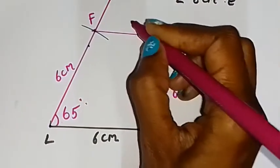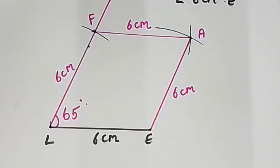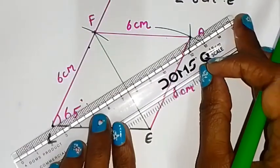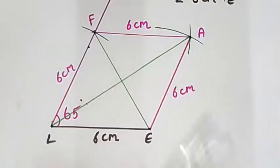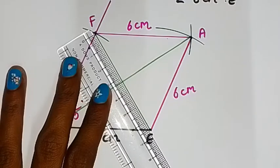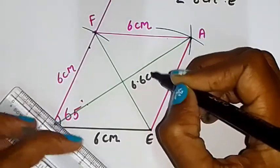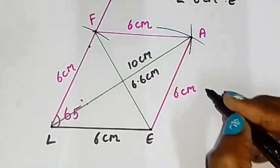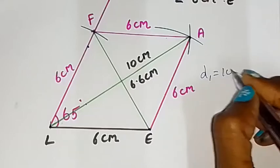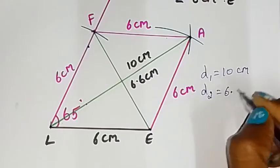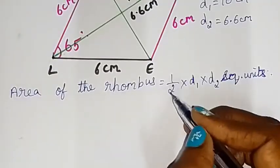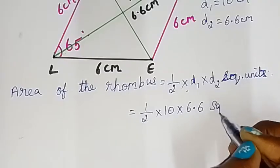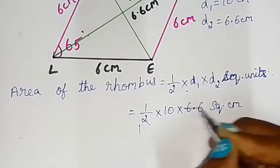Now measure the diagonal values to find the area. Draw the diagonals by joining opposite vertices. The diagonal D1 measures 10 cm and diagonal D2 measures 6.6 cm. Area of rhombus equals half into D1 into D2 square units, which equals half into 10 into 6.6 square centimeters. Simplifying: half of 10 is 5, so 5 into 6.6 equals 33 square centimeters.